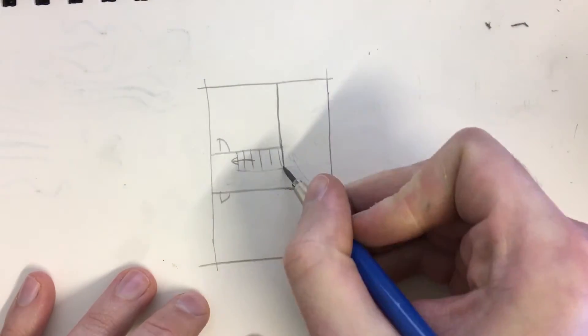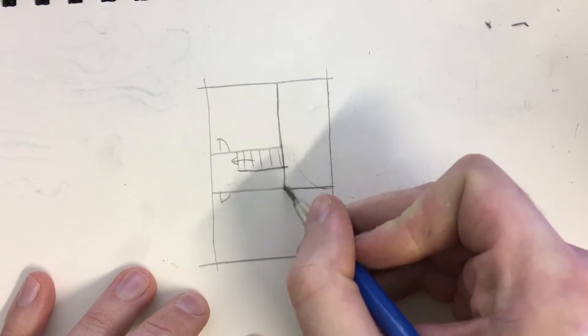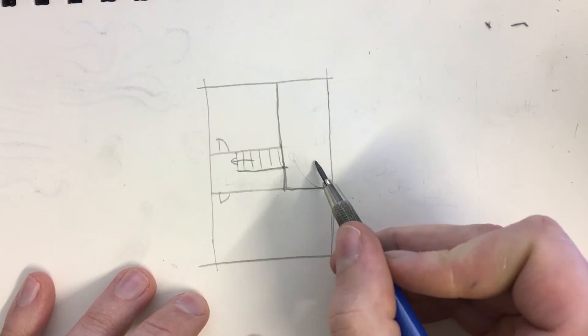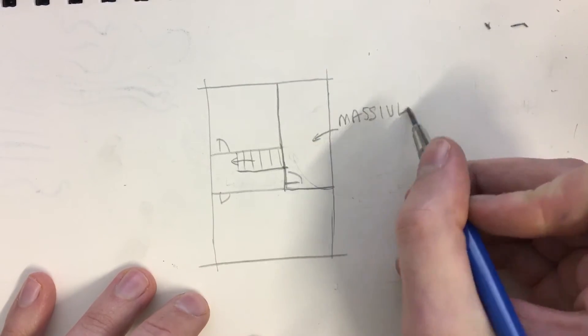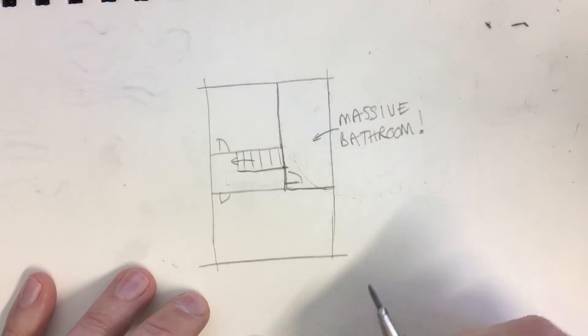So we're going to get rid of all of that, we're going to take the boiler out altogether and move it downstairs. Extend that wall downward and take out the two walls that were there beforehand, which would give us a massive bathroom.